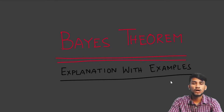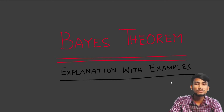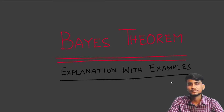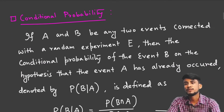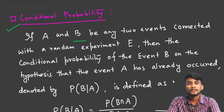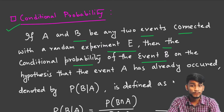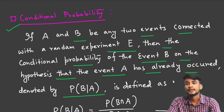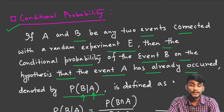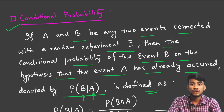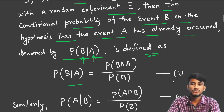Before going to the statement of Bayes' theorem, we first discuss conditional probability, because from the concept of conditional probability the Bayes' theorem or Bayes' rule comes. So what is conditional probability? If A and B are two events connected with a random experiment E, then the conditional probability of event B on the hypothesis that event A has already occurred, denoted by P(B|A), is defined as P(B|A) = P(A∩B) / P(A). Let us take this as equation number one.